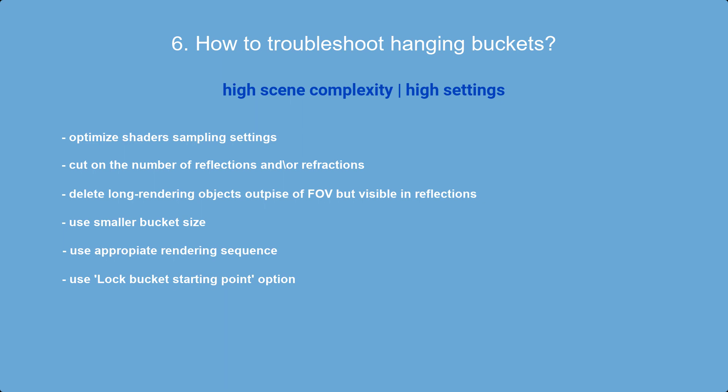If starting early isn't enough and other buckets finish before the slow ones, you can try the opposite method: leave the long-rendering part for the last buckets, divided by the automatic bucket division system. The downside is it's harder to set the sequence to end on the slow part. For animations, the slow area can change position frame to frame, making it hard to fix the start or end point — in that case you need smaller buckets, optimized settings, or split rendering sequences.